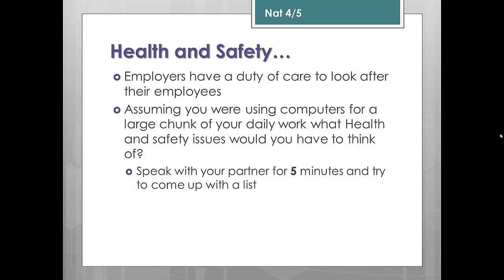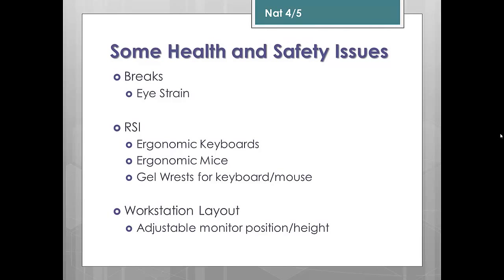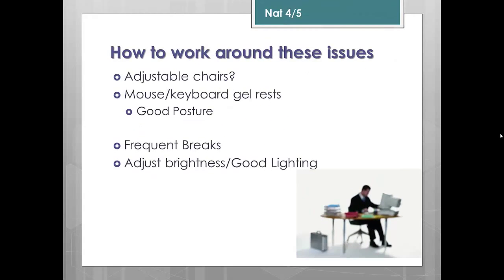The last issue to look at is health and safety for computer users. If you're using computers for a large part of your daily work, you need to consider several issues. For typing, something as simple as a document holder can help. Chairs should be adjustable, with back support and armrests, particularly for people with back conditions. You can give people breaks to help with eye strain. RSI — Repetitive Strain Injury — can be combated using ergonomic keyboards, mice and gel rests. You can also adjust workstation layouts, for example raising a monitor so people don't need to stoop their neck. Frequent breaks, good lighting, and adjustable chairs all help address these issues.